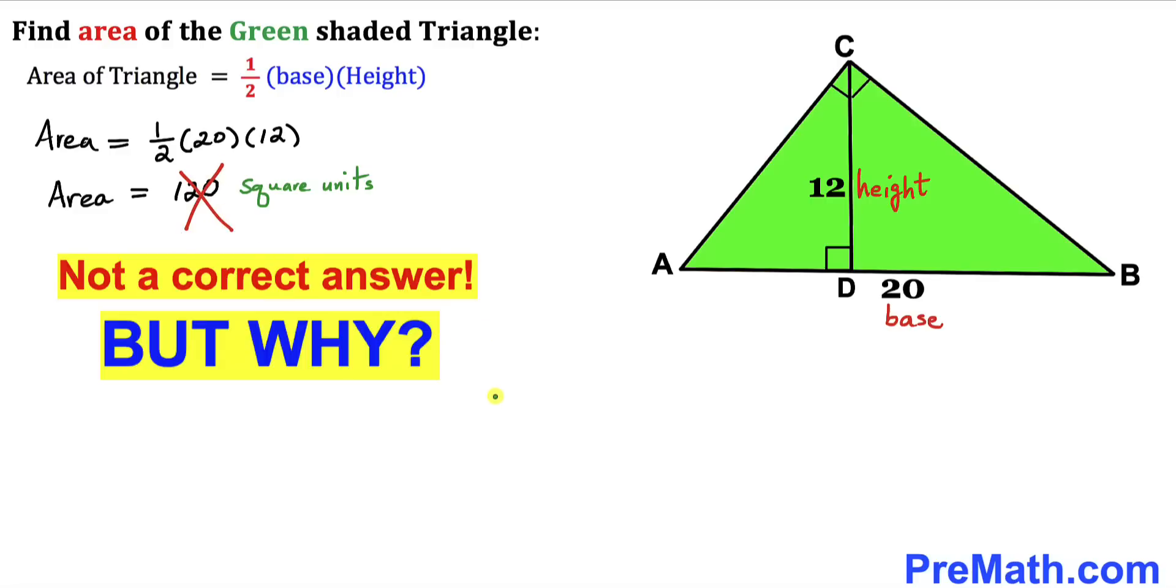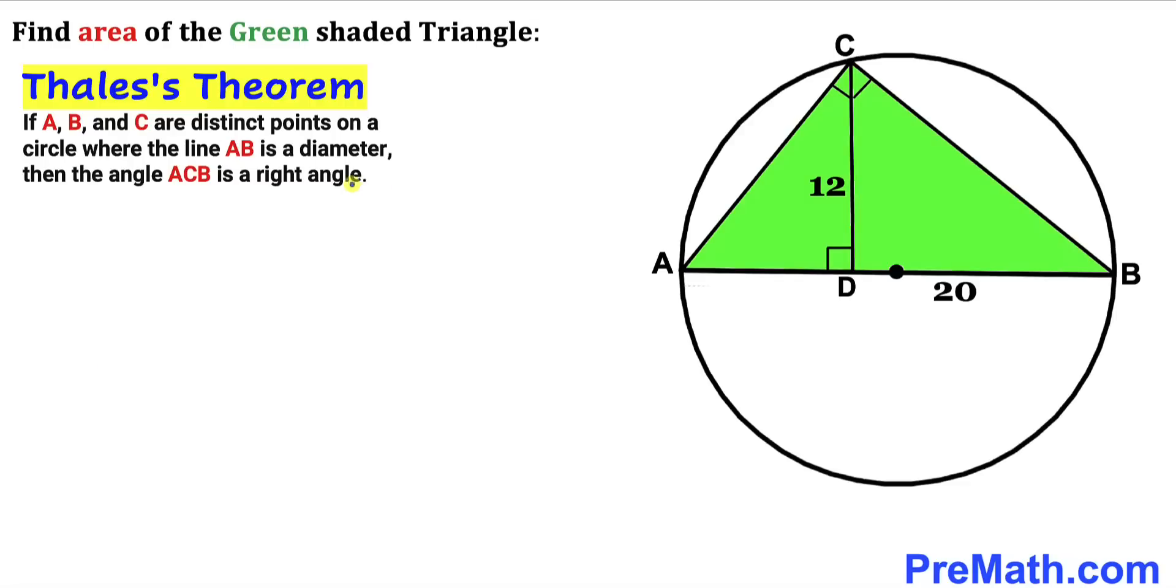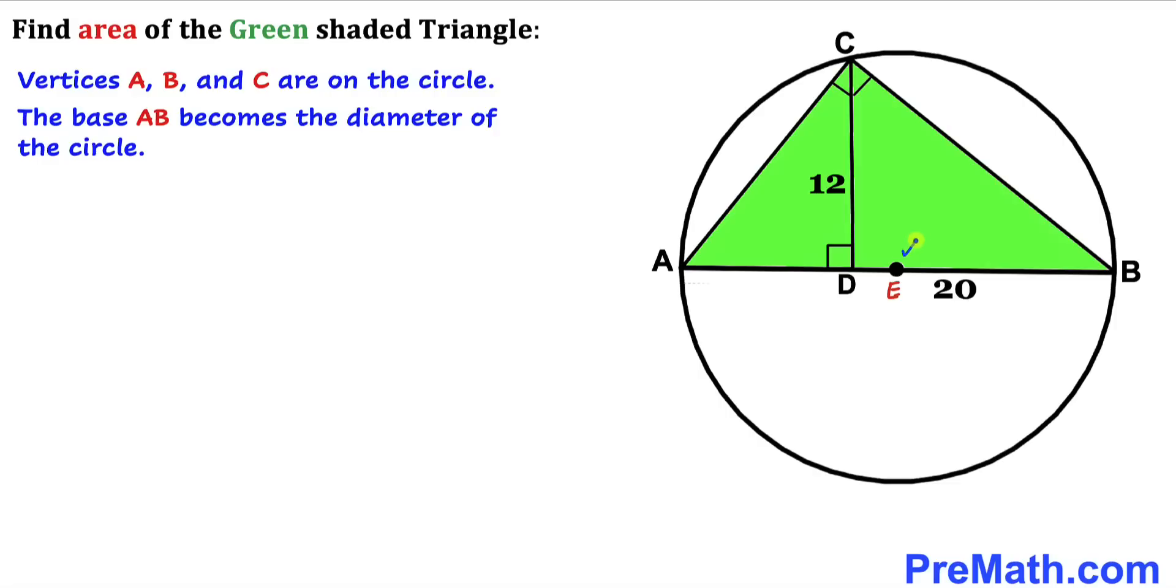I'm going to show you why this is not possible. Let's recall Thales' theorem. According to this theorem, points A, B, and C are on the circle, and moreover, base AB is the diameter of this circle. Point E is the center of the circle such that AE and EB are the radii.